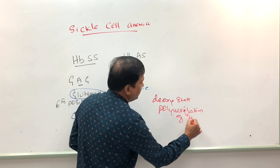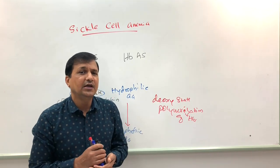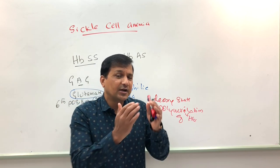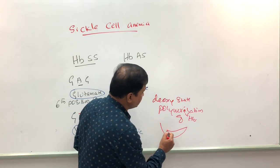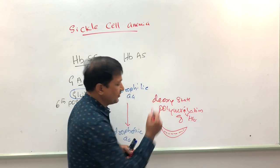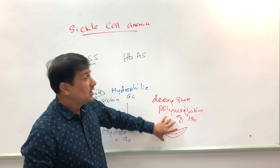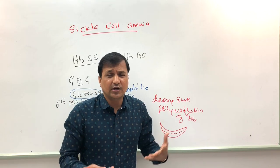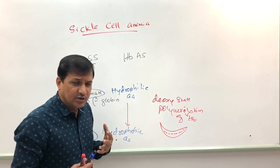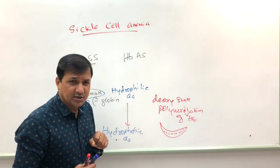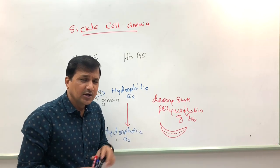Because of these long thread-like insoluble fibers inside the red blood cell, the red blood cell's shape changes from the normal biconcave shape to the classic sickle shape — which is why the disease is called sickle cell. Anemia means lower hemoglobin content in the blood. In the deoxy condition, polymerization of hemoglobin causes this change to the sickle shape, producing an insoluble form of hemoglobin.